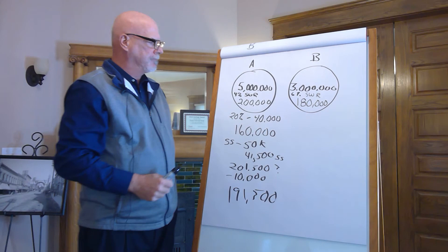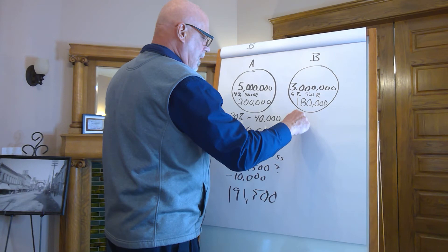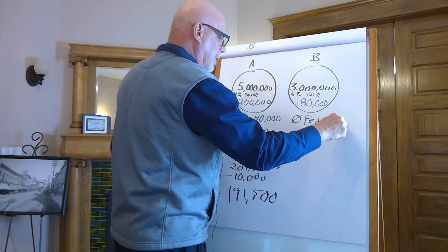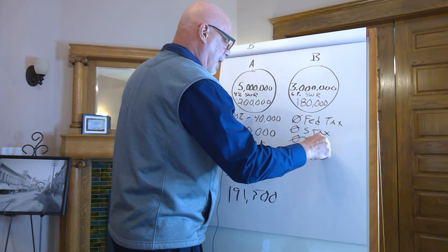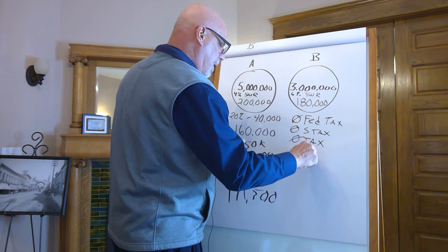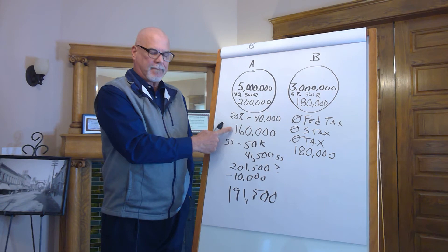Now, which one do you want to be? Well, traditional planning says you're ahead. Except, because of where this money lays, there's zero federal tax, zero state tax, zero any tax. It's tax exempt. So, you get to keep $180,000. Over here, it was $160,000 because you had to give it to the government. Now, who do you want to be?